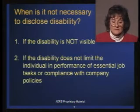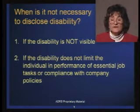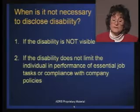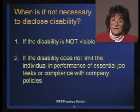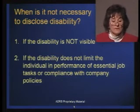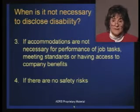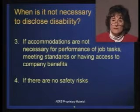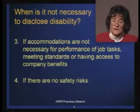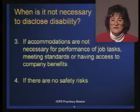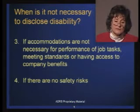Let's flip that coin over and look at when it might not be necessary to disclose disability — there are really four reasons. The first is the opposite of what we just looked at: if the disability is not visible, it may not be necessary to disclose. If the disability does not limit the individual in the performance of the essential tasks or in compliance with company policies, you probably would not have to disclose. Third, if accommodations are not necessary for the performance of essential job tasks, for meeting job standards, or for having access to company benefits. And fourth, if there are no safety risks related to the disability.